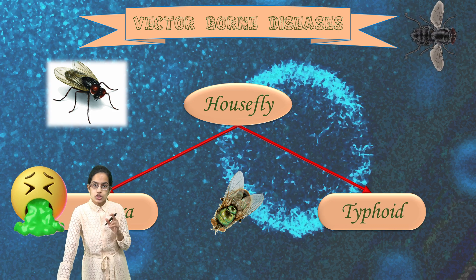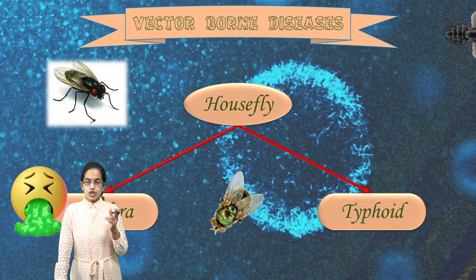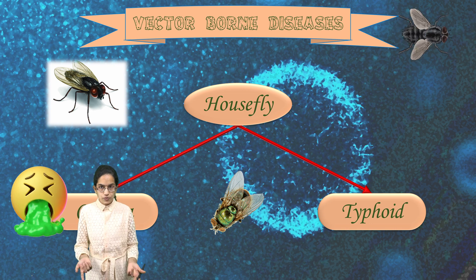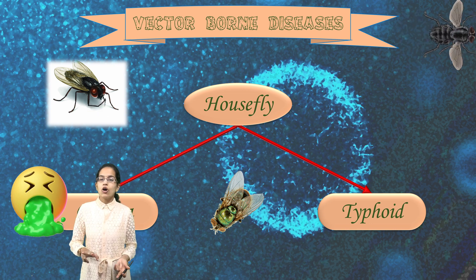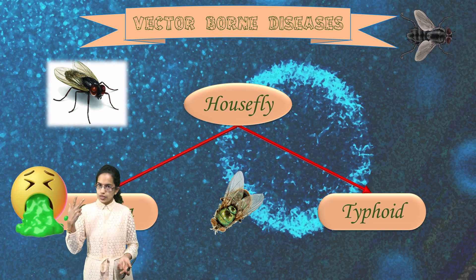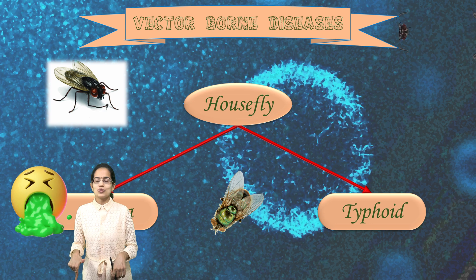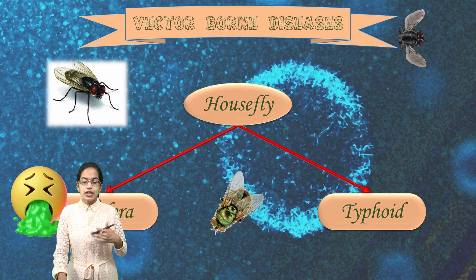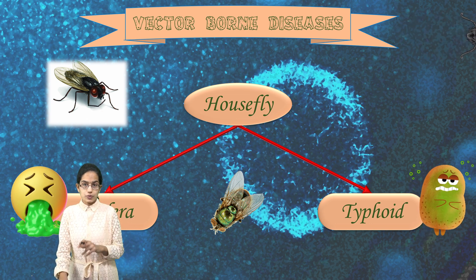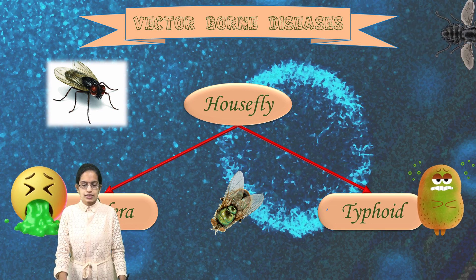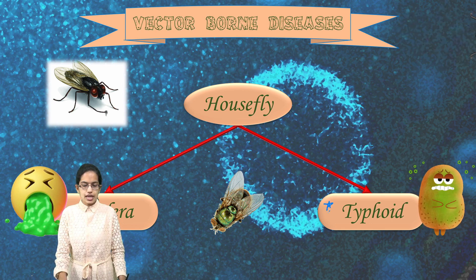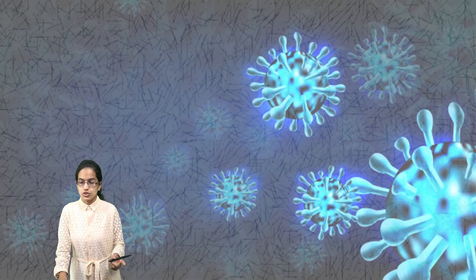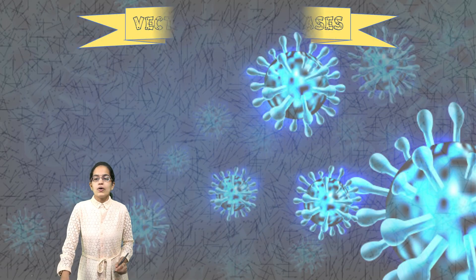Typhoid is also caused by another vector which is cockroach. So be very careful — if it is a question about which vector causes typhoid, both options would be correct: housefly as well as cockroach. When it comes to housefly specifically, it causes cholera and typhoid. Typhoid is caused by both housefly as well as cockroaches.